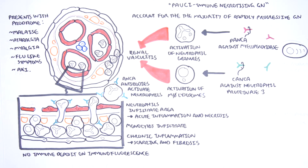Treatment of ANCA-associated glomerulonephritis includes induction treatment involving steroids and rituximab or cyclophosphamide, followed by maintenance therapy with azathioprine, mycophenolate, or rituximab for at least 12 months after stable remission has been achieved.